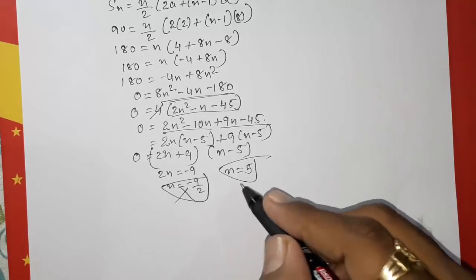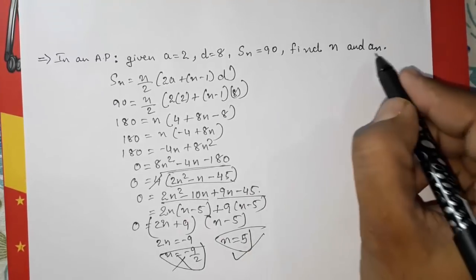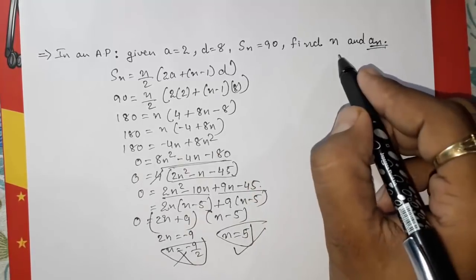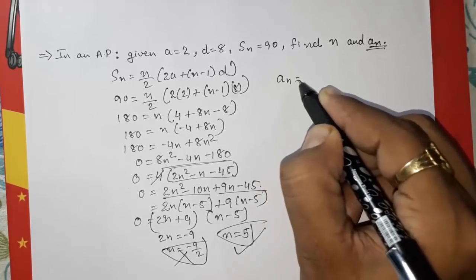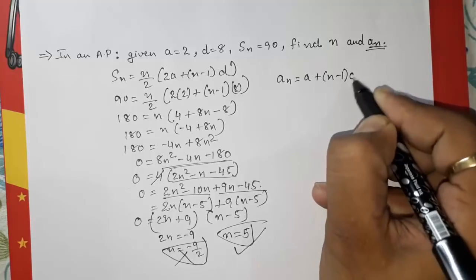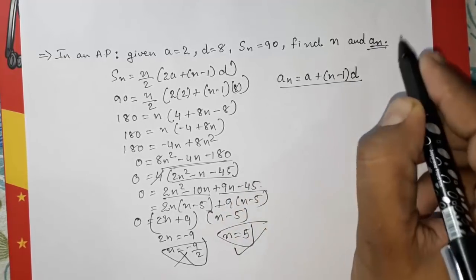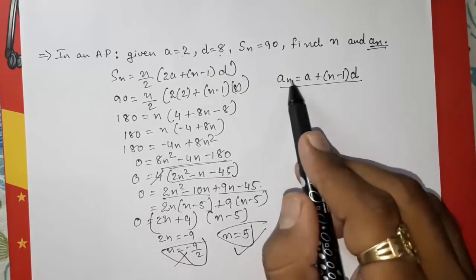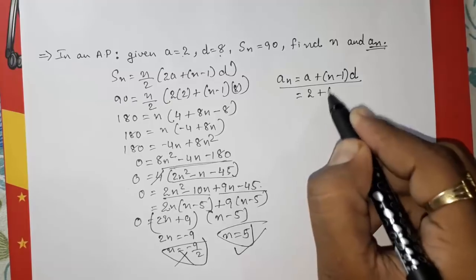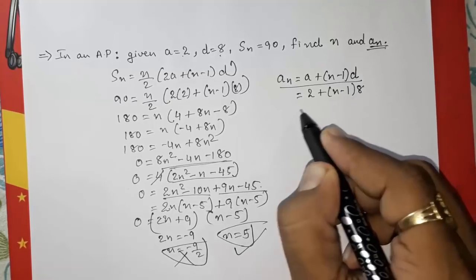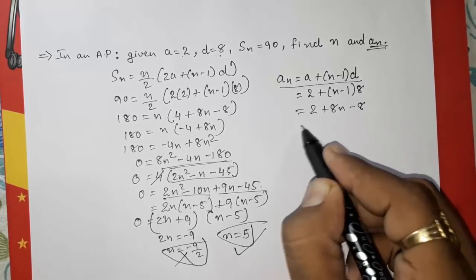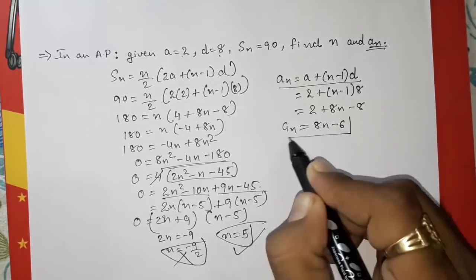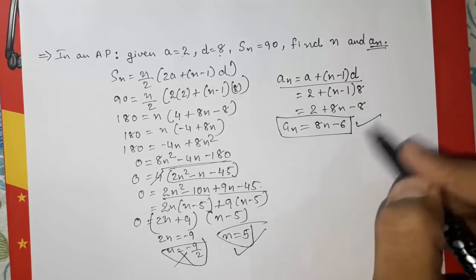Now with n = 5, we want to find aₙ. Using the formula aₙ = a + (n-1)d, we substitute a = 2 and d = 8: aₙ = 2 + (n-1)×8 = 2 + 8n - 8 = 8n - 6. So the nth term of the given AP is aₙ = 8n - 6.